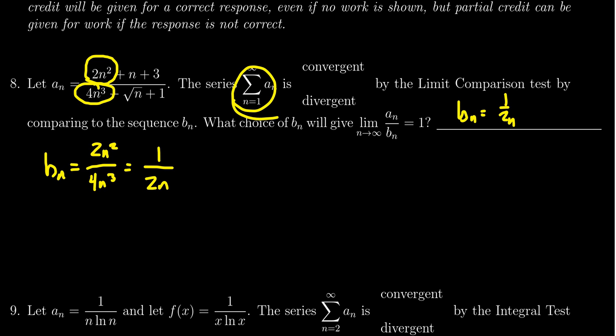And now the series b_n, the series 1 over 2n here, this is divergent by the p-test. I mean, it's just 1 half times the harmonic series.